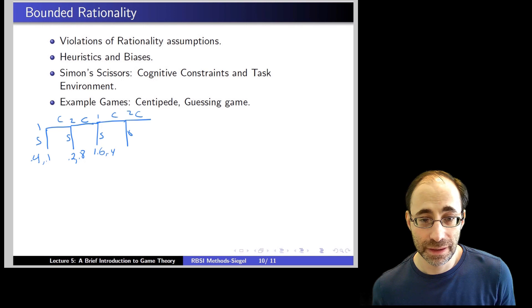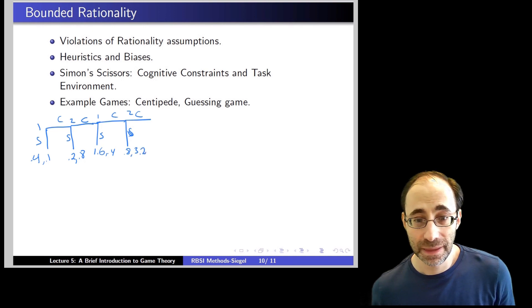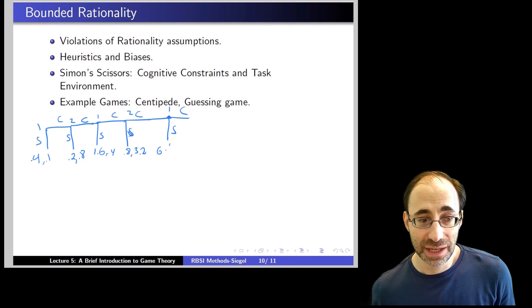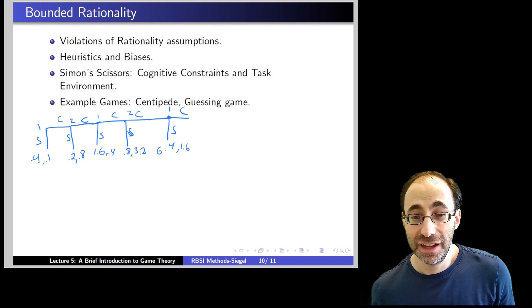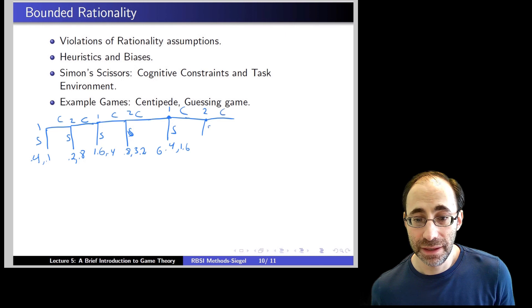If player one continues, then player two gets a choice again, stop or continue, as before. If player two stops, then player one gets 80 cents, and player two gets $3.20. If player two continues, then player one gets to go again and gets $6.40, and player two gets $1.60. If player one continues, then there's a final decision to be made by player two of continue or stop. The stop gets player one $3.20 and player two $12.80, and a continue gets player one $2.56 and player two $6.40.